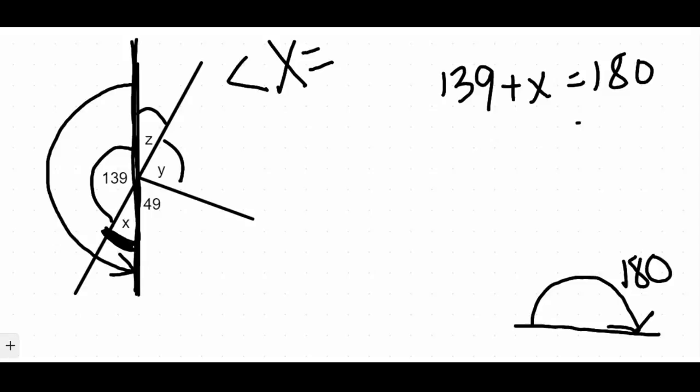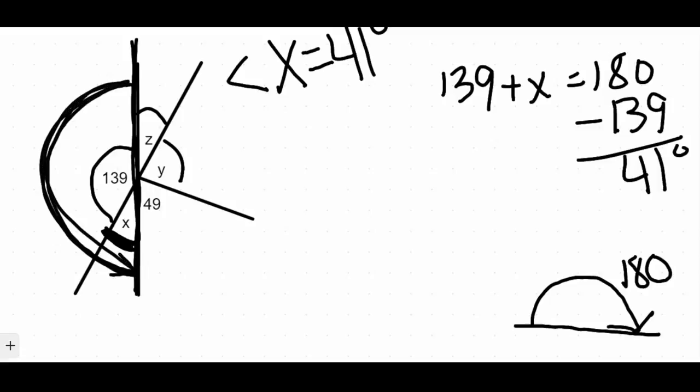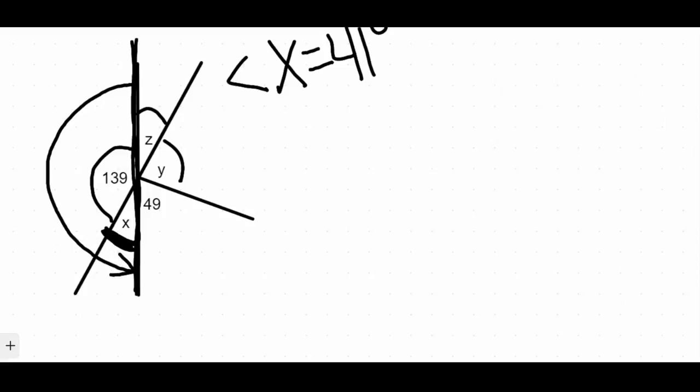So if I just take this 180 and subtract 139 from it, well, let's see, 180 minus 139 is 41. What that tells me is that angle X is 41 degrees. And I was able to do that just by using the definition of a straight angle. So 139 plus that 41-degree angle X does add up to 180 degrees, which does make up a straight angle there.